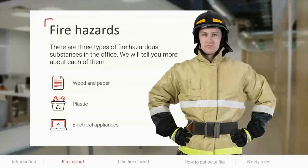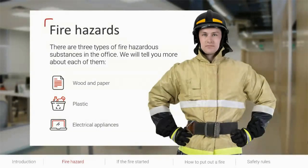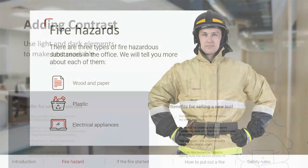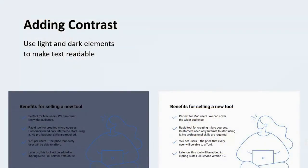The second typography rule is to add contrast to the text. Before we talk about this rule, I'd like to ask: react in the chat with a thumbs up if you always read text from the very beginning to the very end, and thumbs down if you don't.